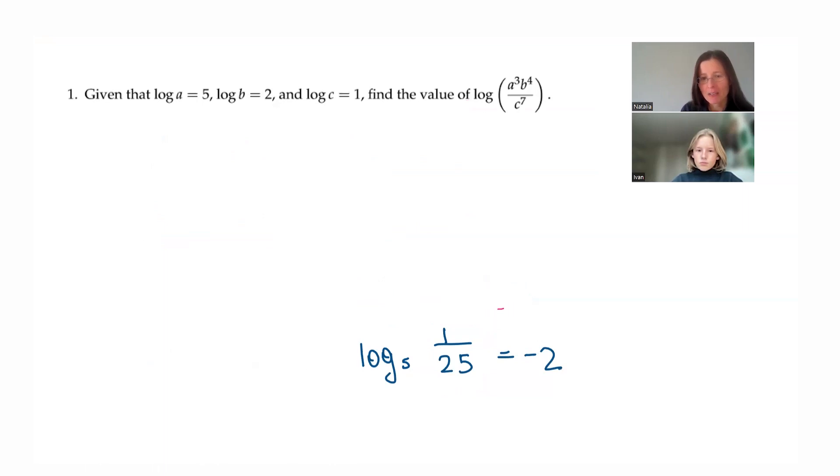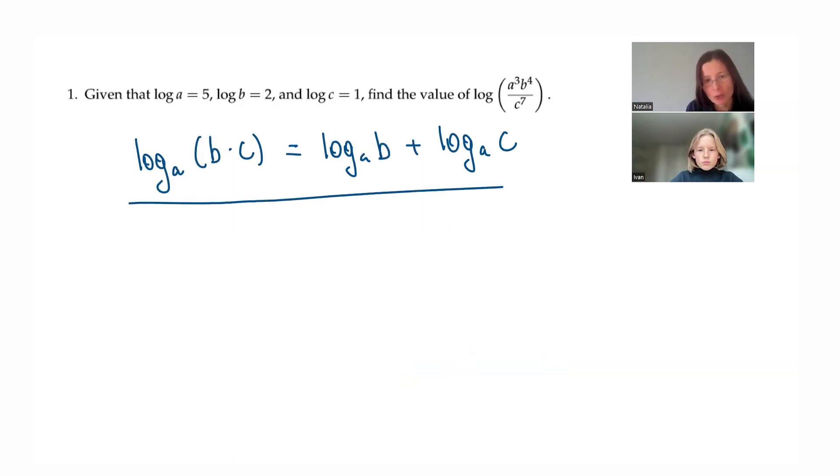So here we have a product of a lot of terms and we have it's over something. We are going to use a few rules. First one is logarithm, say, base A of B times C will equal to logarithm base A of B plus logarithm base A of C. We call this the product rule for logarithms. And we can prove it through the laws of exponents. And we can do it in a different video.